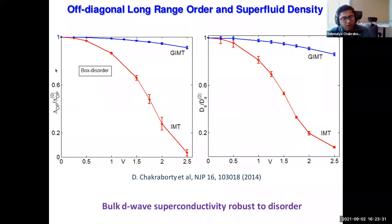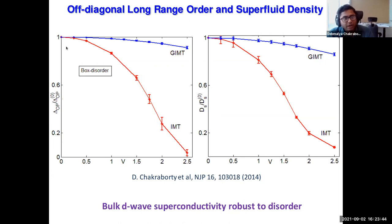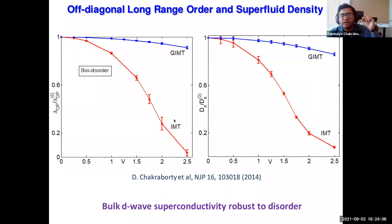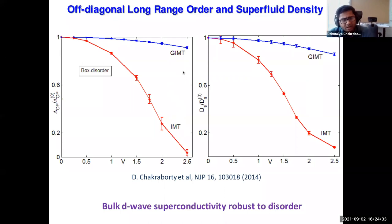If we plot the off-diagonal long-range order and the superfluid density as a function of disorder strength V: without strong correlation (IMT, red curve), increasing disorder suppresses both quantities and drives them effectively to zero for disorder strength of order 2t. This is expected because a d-wave order parameter with nodes is sensitive to disorder. But if you introduce strong correlation via GIMT, the reduction of the superconducting order from its homogeneous value is only about 10–20%. Strong correlation makes superconductivity robust to disorder.